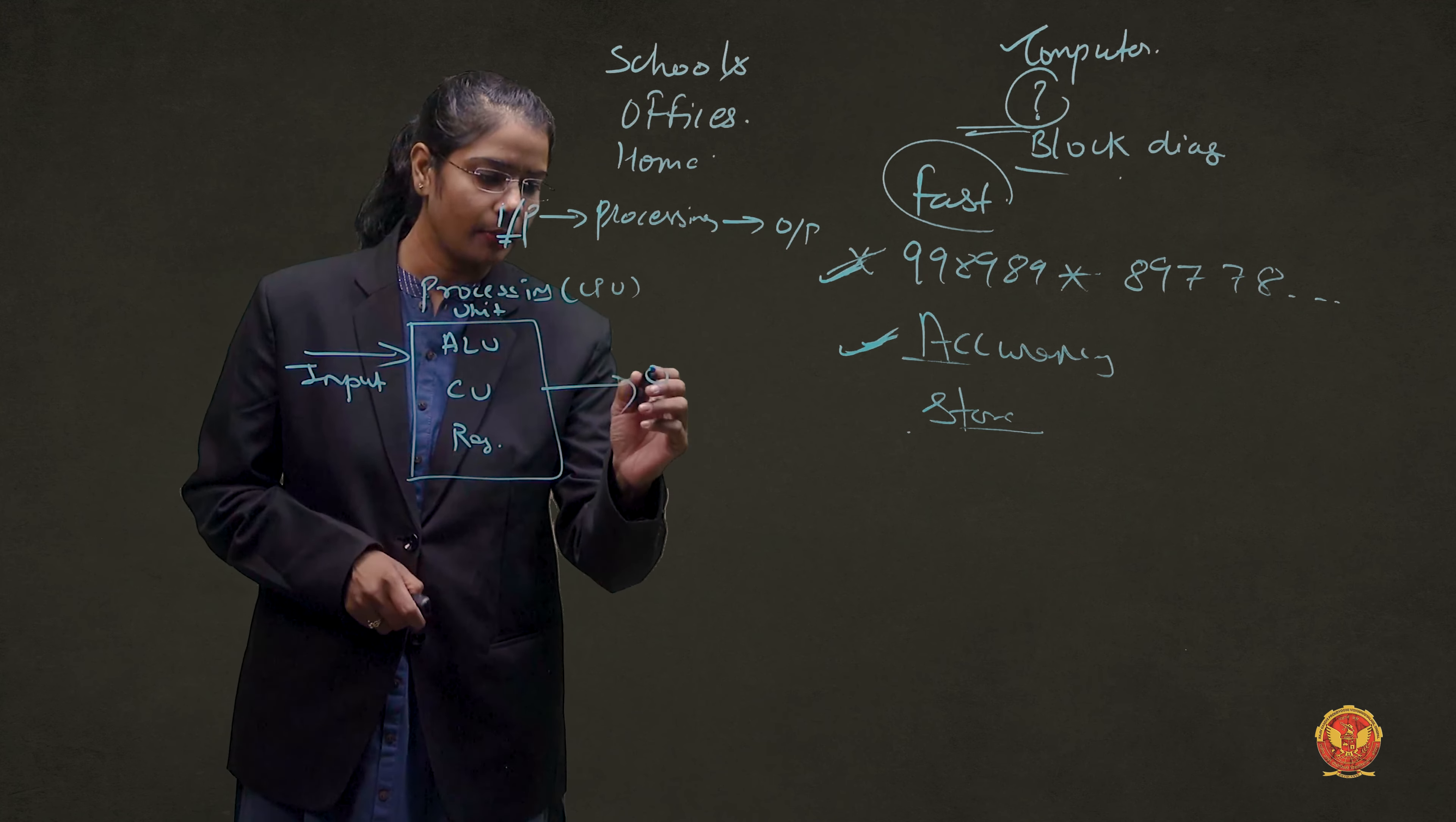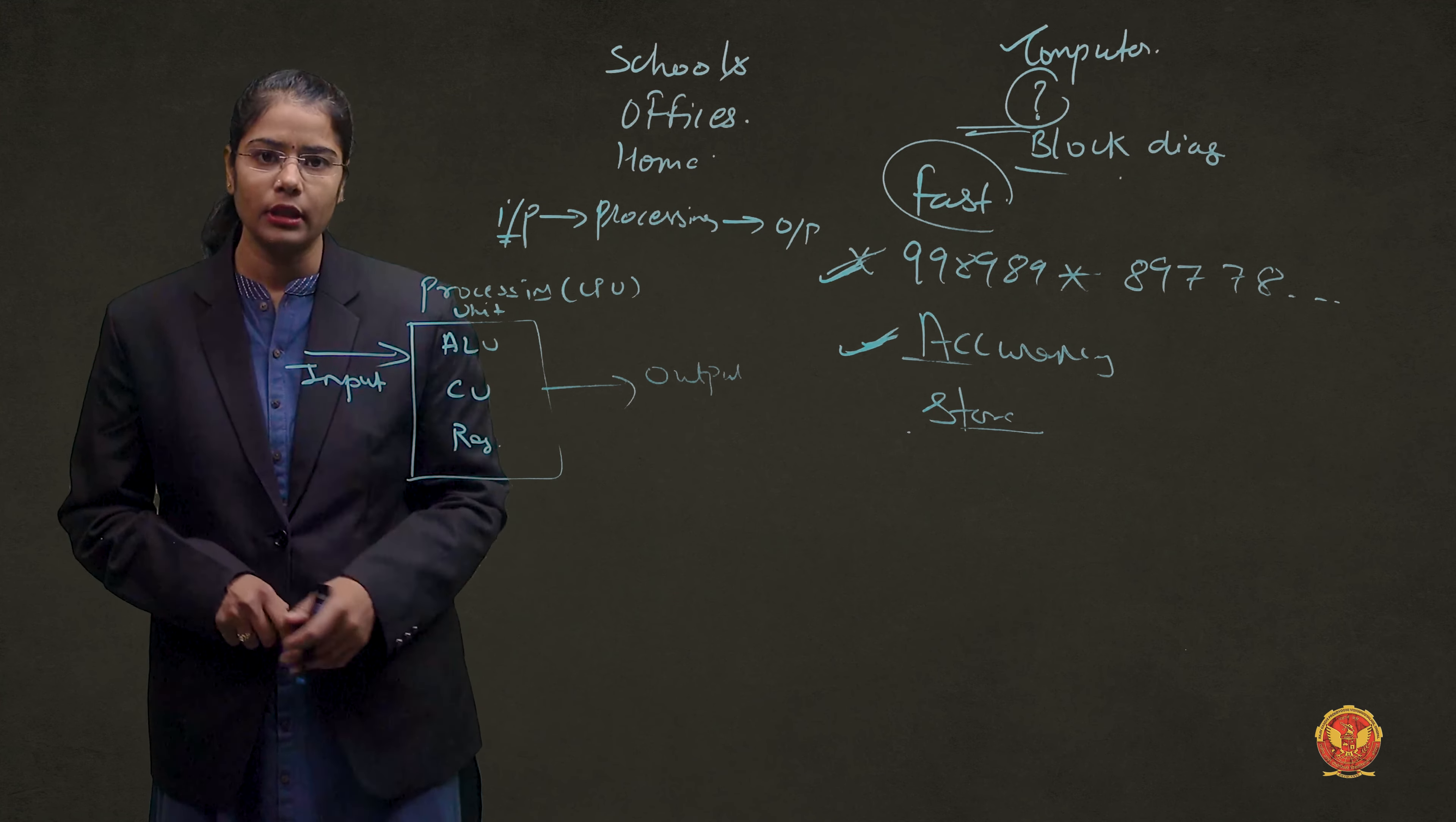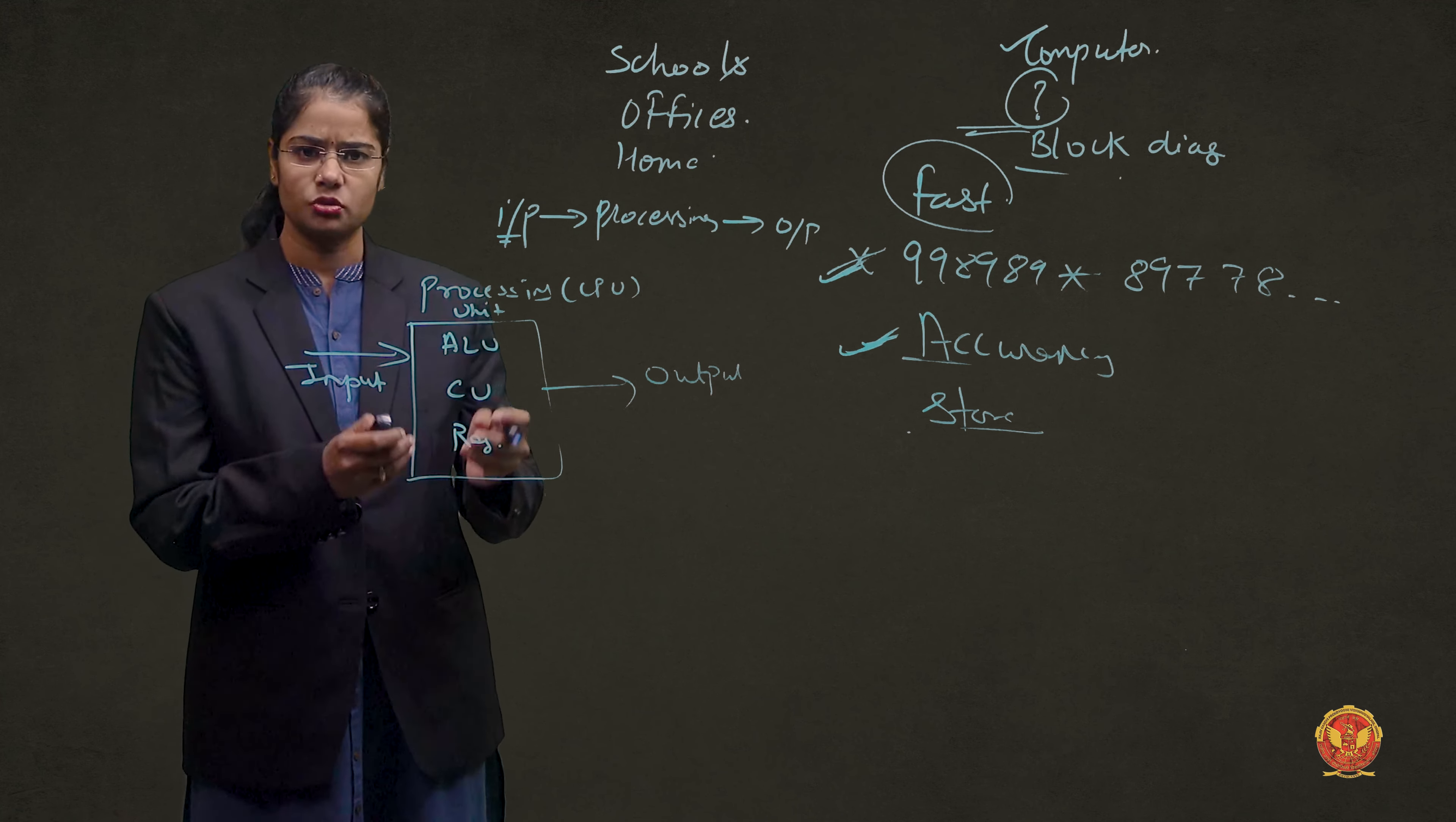This processing unit with all of these components will generate an output. So, here, we get output and this is our result. This is raw data. After that, we get a result which we call output.